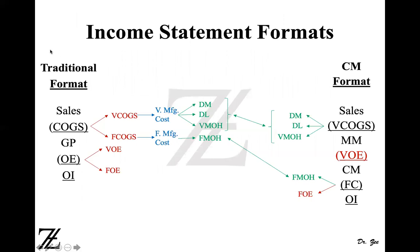On the left-hand side is the traditional format income statement: sales minus cost of goods sold is gross profit, and gross profit minus operating expenses is operating income. On the right-hand side is the contribution margin format: sales minus variable cost of goods sold is manufacturing margin, minus variable operating expenses is contribution margin, minus fixed cost is operating income. In condensed form, you can simply do sales minus variable cost to get contribution margin, skipping the manufacturing margin step.